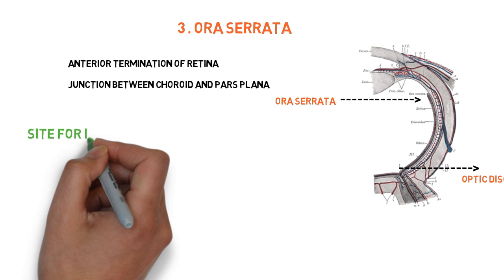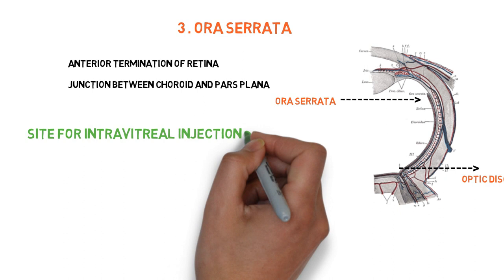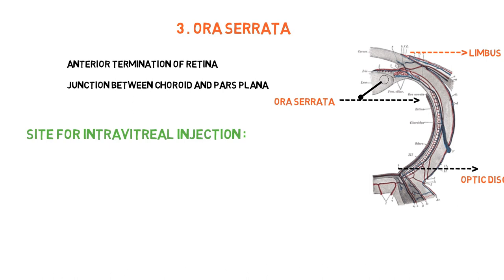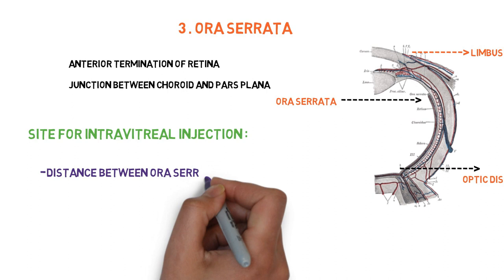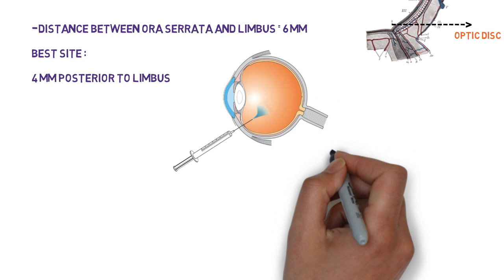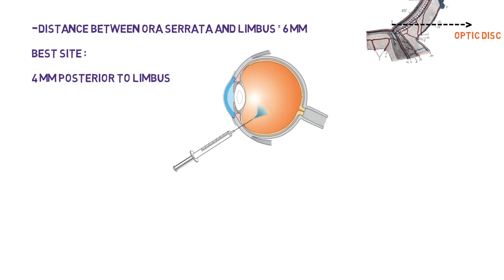By looking at a normal eye, we cannot identify the point of the ora serrata directly. However, we can identify the limbus. The distance between the limbus and the ora serrata is nearly 6 mm. The best site for intravitreal injection is 4 mm posterior to the limbus, where there is an absence of nerve cells and no damage to the retina.